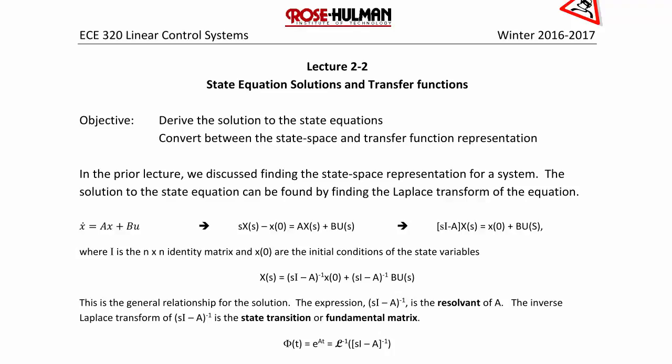In the prior lecture, we discussed finding the state space representation for a system. The solution to the state equation can be found by taking the Laplace transform of x-dot = Ax + Bu. The Laplace transform gives s·X(s) - x(0) = A·X(s) + B·U(s). Collecting like terms: (sI - A)·X(s) = x(0) + B·U(s), where I is the n×n identity matrix and x(0) are the initial conditions. Solving for X(s): X(s) = (sI - A)⁻¹·x(0) + (sI - A)⁻¹·B·U(s). This is the general relationship for the solution to the state equations.